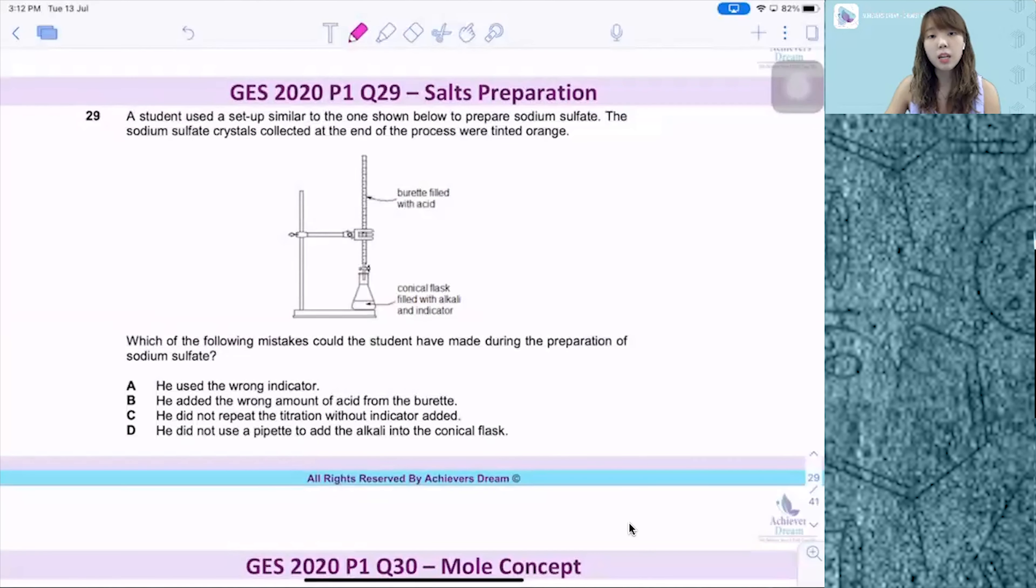For question 9, a student used a setup similar to the one shown below to prepare sodium sulphate. The sodium sulphate crystals collected at the end were tinted orange, so which of the following mistakes could the student have made during the preparation of sodium sulphate?